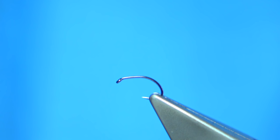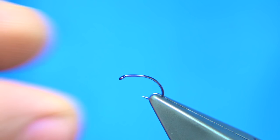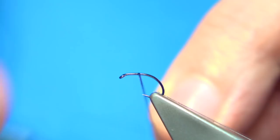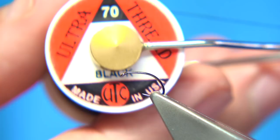Now the thread I'm going to use for the body, I'm going to use the UTC thread, nice flat thread. And we start just lined with the point of the hook, we start to work our way down.